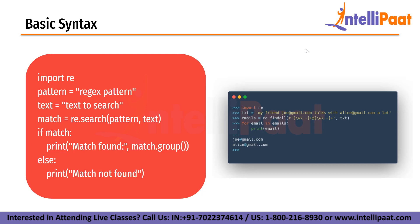Moving on to 'if match': this checks if a match was found. If a match was found, the condition is true and the code inside the if statement will be executed; otherwise, the code inside the else statement is executed. The print function prints the match string if a match was found, and the group method returns the match string. Finally, the else condition is the code block that is executed if no match is found.